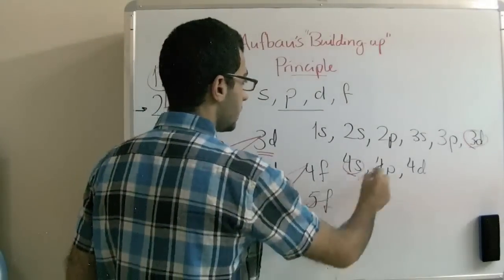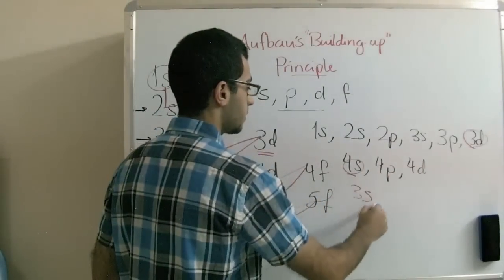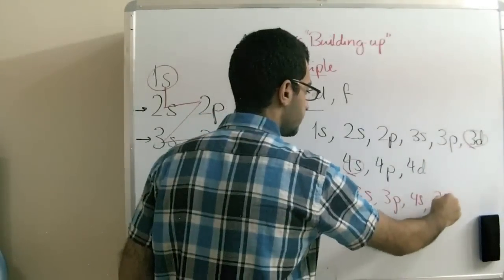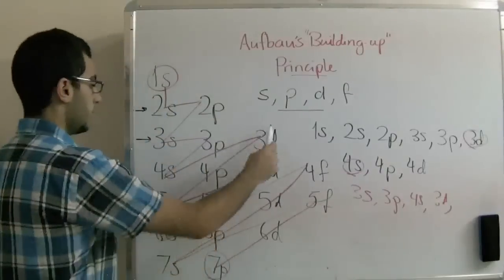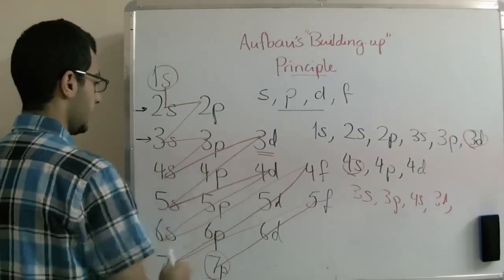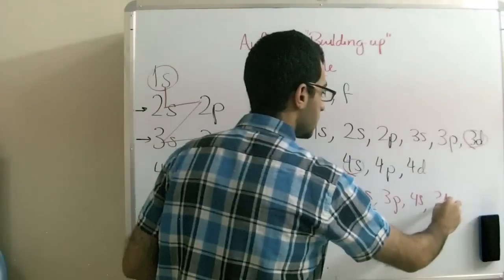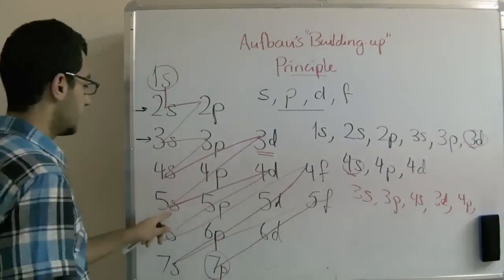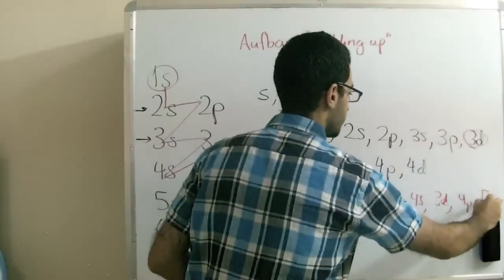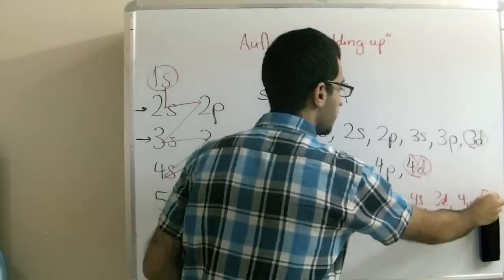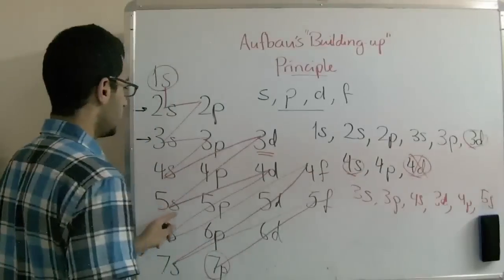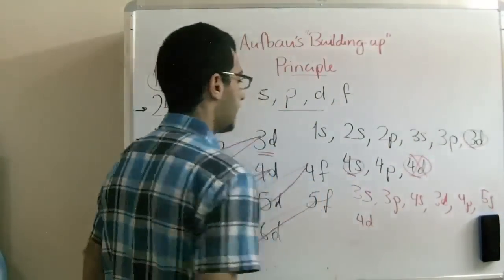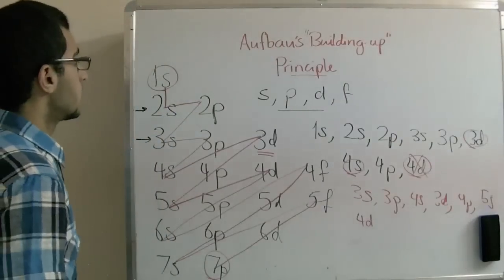So the order will be like this: 3s, 3p, then 4s, then 3d. Then we go to the 4p, then the 5s, not the 4d, the 5s first, then we go to the 4d, and so on.